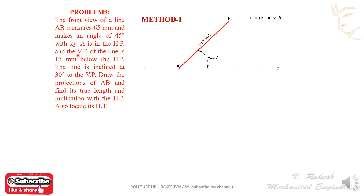Draw the locus line — that is the locus of b'. Also given: the vertical trace is 15 mm below the HP. We know one condition: the final front view a'b' and the horizontal trace point H and VT are in the same line. So extend the final front view up to the locus of VT — this is the vertical trace point. Draw the projector from the vertical trace to XY; it gives the V point.